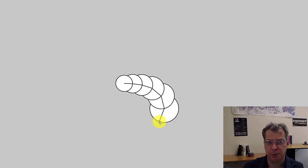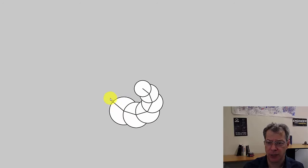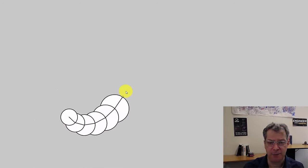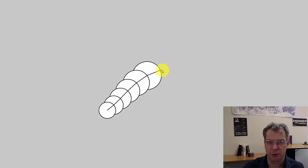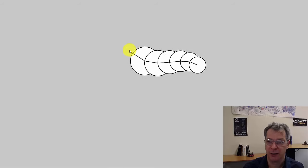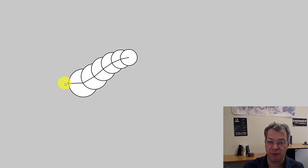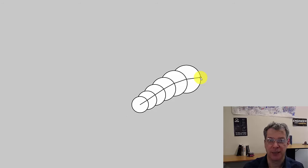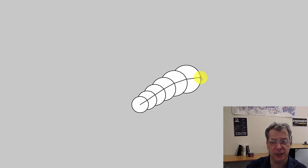Each segment rotates and then moves, and the one behind it rotates and moves. Speeding it up, you'll notice they're following the mouse — each segment follows the one in front of it by rotating and then moving forward to maintain a constant distance. There are a bunch of things we can play with to get different effects.